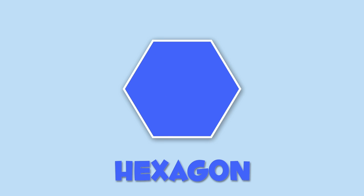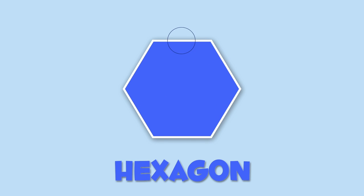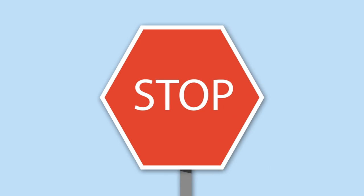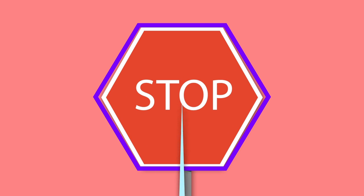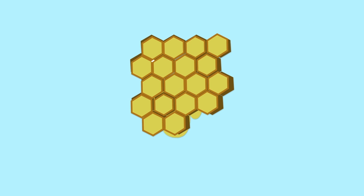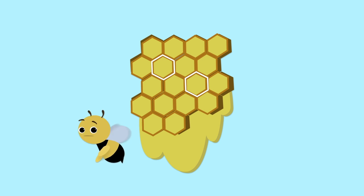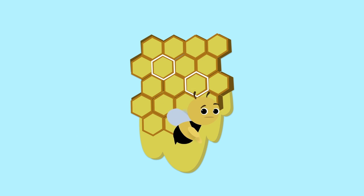Finally, I'll show you the hexagon. Hexagons have six sides. A hexagon is like this stop sign or like this beehive. We better go now — the bees are getting angry!